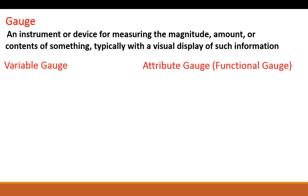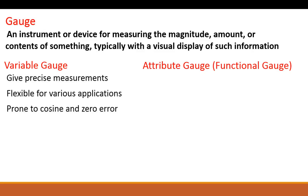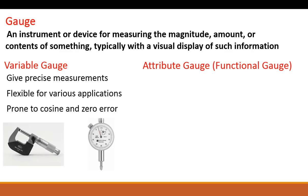As far as inspection, we have two different types of gauges: a variable gauge and an attribute gauge, also known as a functional gauge. Variable gauges give precise measurements — they're flexible and have a lot of different applications. You can take a variable gauge and measure several different types of features and components. However, they are prone to certain types of errors, two of which are a cosine error and a sine error, also called an Abbe error.